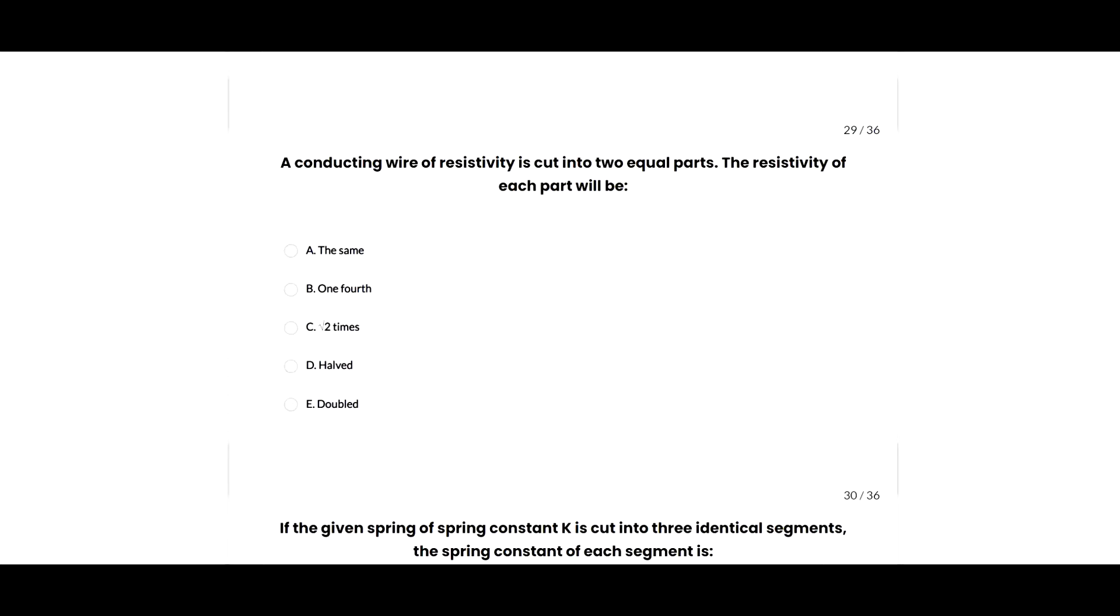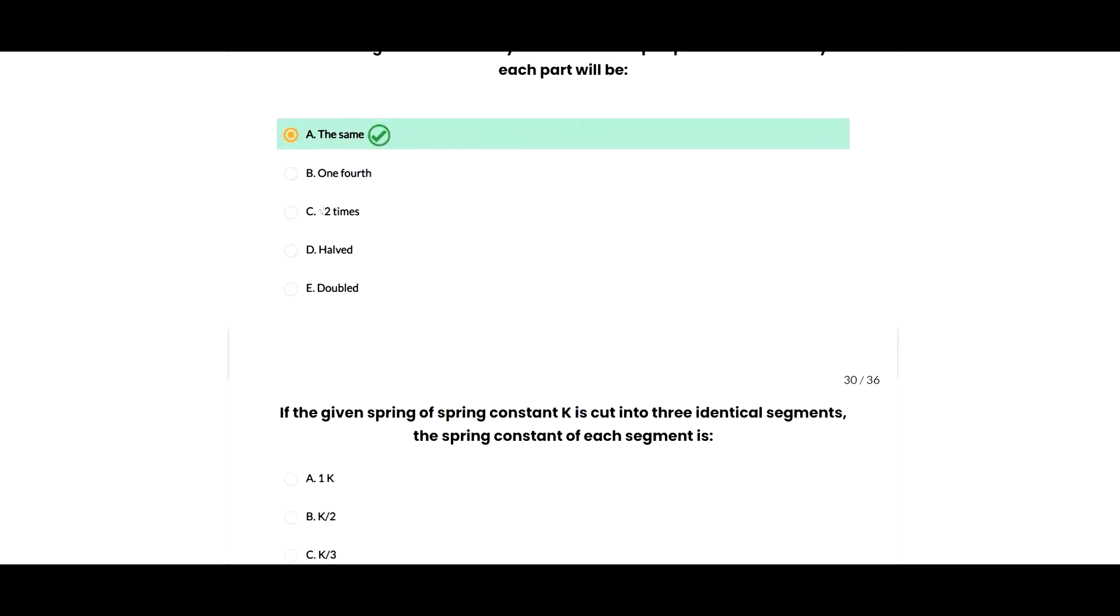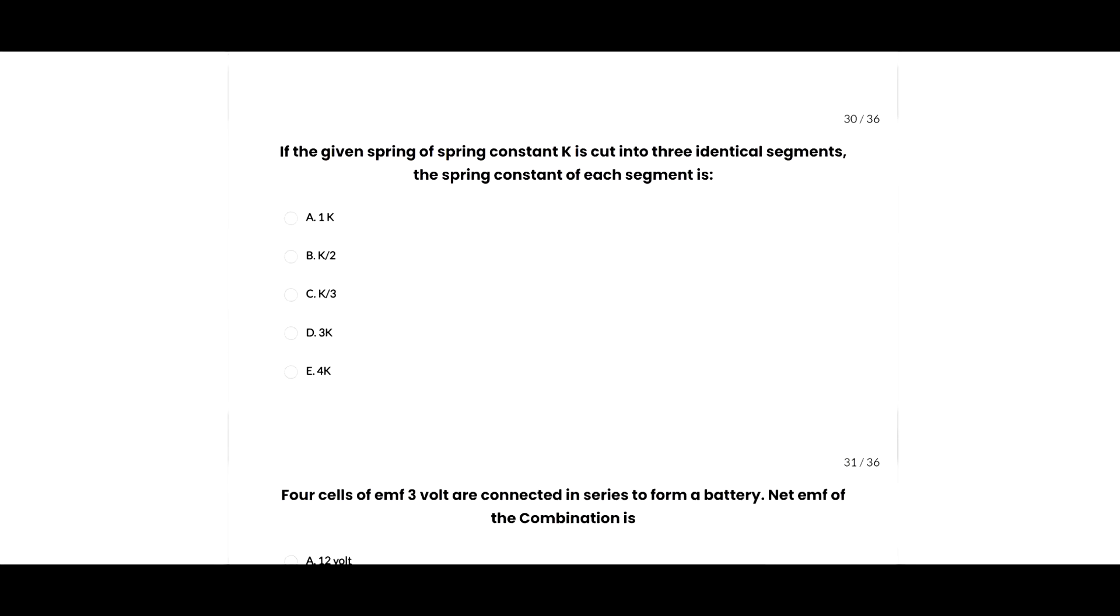Next question: a conducting wire of resistivity is cut into two equal parts. The resistivity of each part will be the same, so A option is correct. Next question: if a spring of spring constant k is cut into three identical segments, the spring constant of each segment will be 3k, so C option is correct.